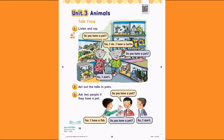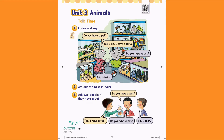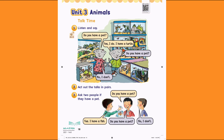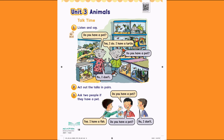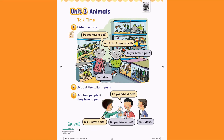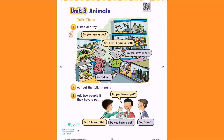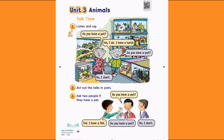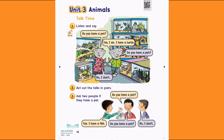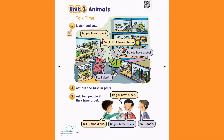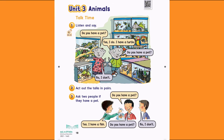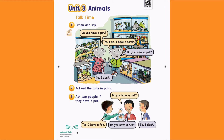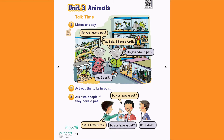Number two: act out the talks in pairs. Number three: ask two people if they have a pet. Do you have a pet? Yes, I have a fish. Do you have a pet? No, I don't.